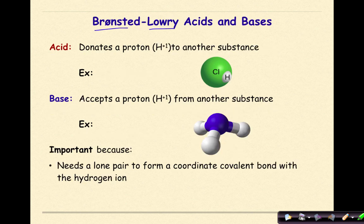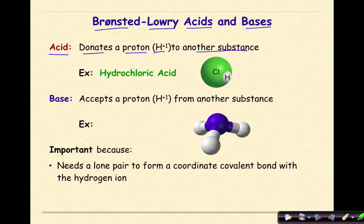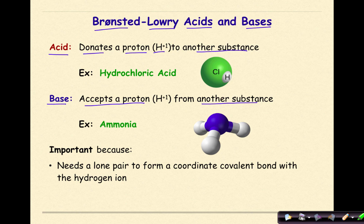Now let's talk about the Bronsted-Lowry definition of acids and bases. Under this definition, an acid donates a proton, or hydrogen ion, to another substance. Hydrochloric acid is still considered an acid. But the difference between the Arrhenius definition and the Bronsted-Lowry definition is that the definition of bases is much larger. Under this definition, a base accepts a proton, or hydrogen ion, from another substance. This is where we'll see ammonia being classified as a base.